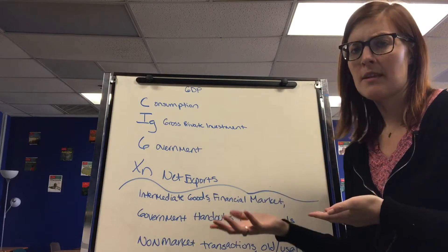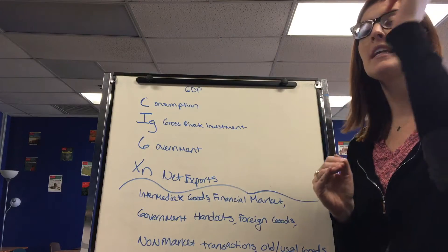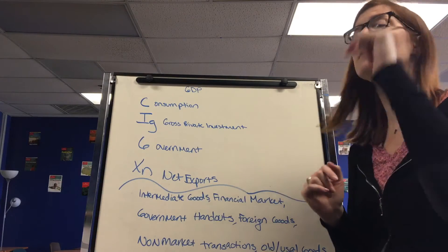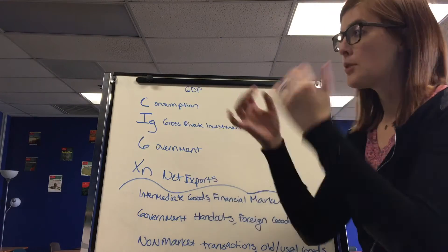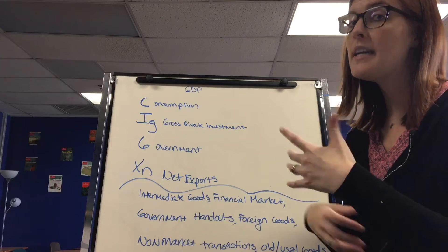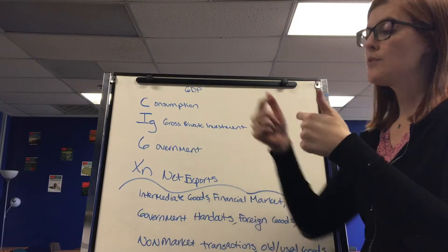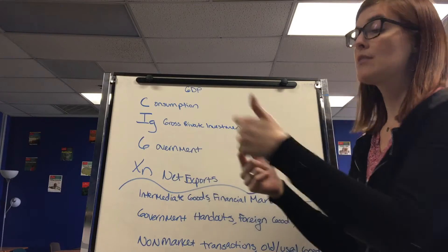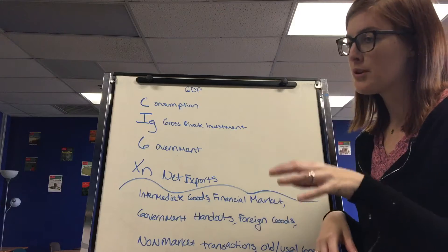Within a country means it has to be made in the United States to count in the United States GDP. So a Japanese car company producing a Honda in Ohio counts in our GDP, not Japan's, which also means if we outsource our production to another country, it counts in their GDP, not ours. It doesn't matter who makes it, it matters where it's produced.